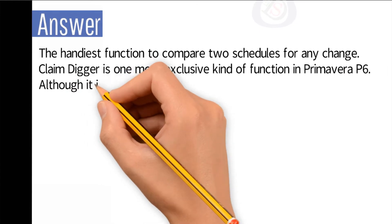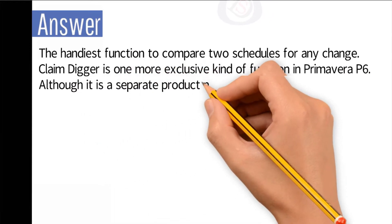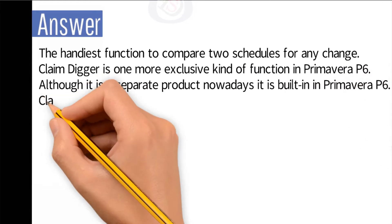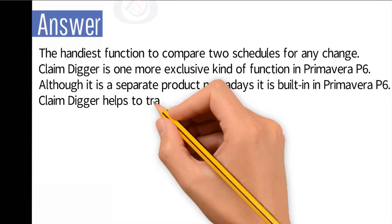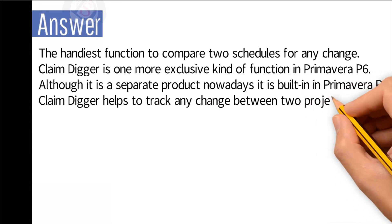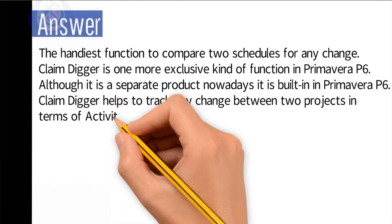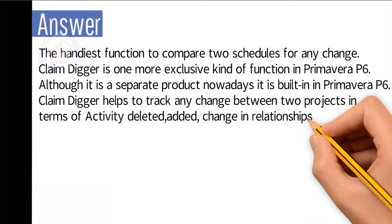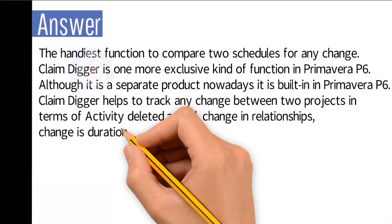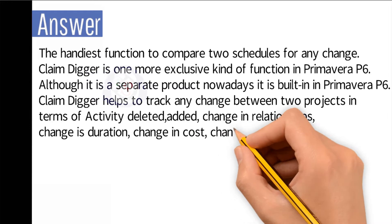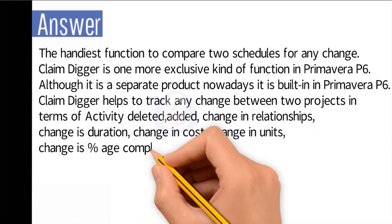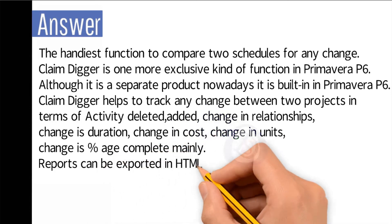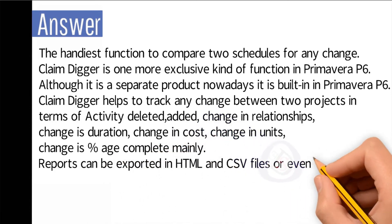Although it is a separate product, nowadays it is built into Primavera P6. Claim Digger helps to track any change between two projects in terms of: activity deleted, added, change in relationship, change in duration, change in cost, change in unit, change in percentage complete. Reports can be exported in XML and CSV file or even text.